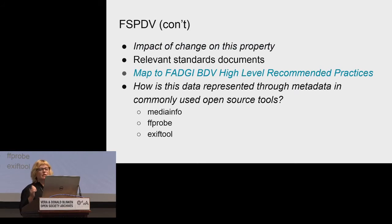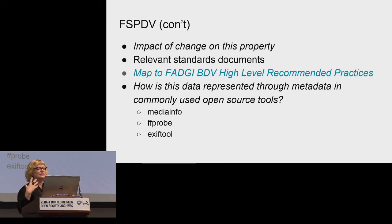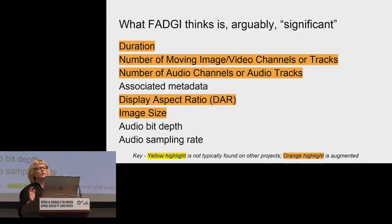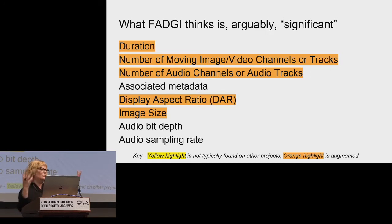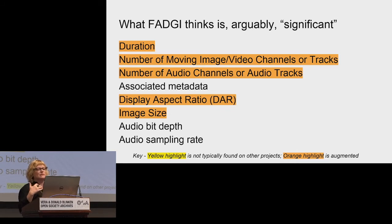We talk about the impact of change and map to high-level recommended practices. We also document how this data is represented in various open source tools — what tags can you expect to see this data in? These are what we think are arguably significant properties. We had wanted to present this at iPRES 2019 but just haven't had the chance to finalize it yet.